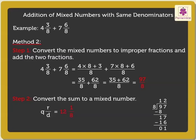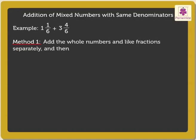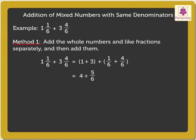Let us try one more example. Why not use the first method here? We add the whole numbers and like fractions separately, then add them. Thus, we get 1+3 plus 1/6+4/6, which is equal to 4 plus 5/6.